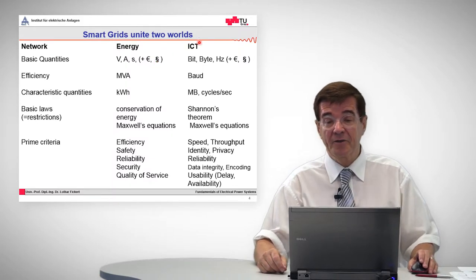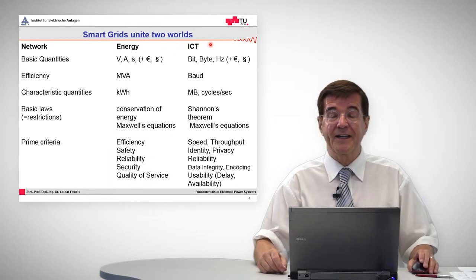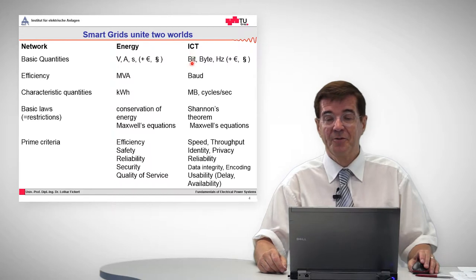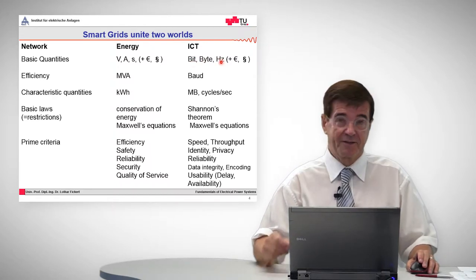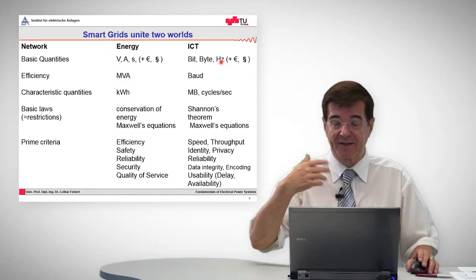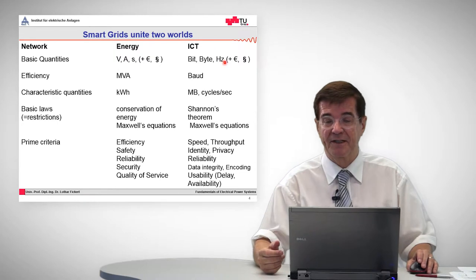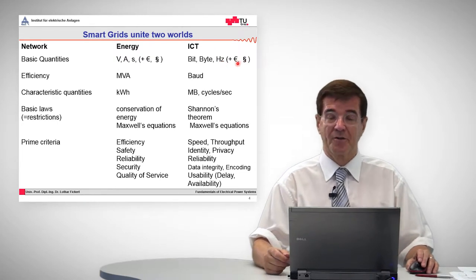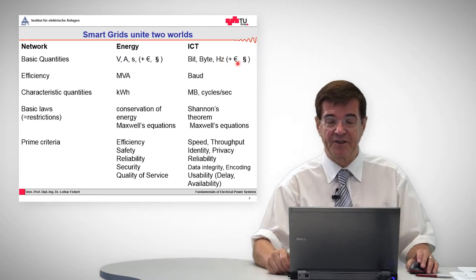And the other world is the world of ICT, information and communication technology, which is given in terms of bits, bytes, hertz, frequency, transmitting power, and so on, and also about the economic considerations.